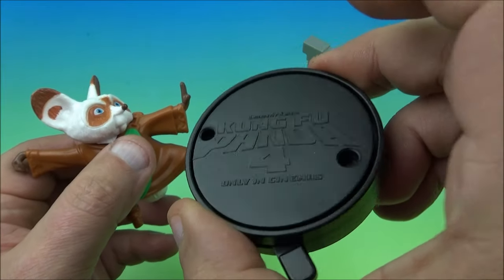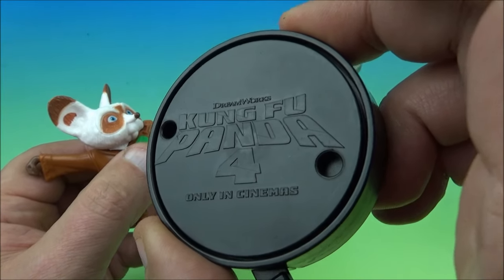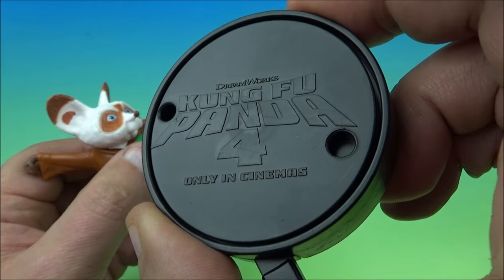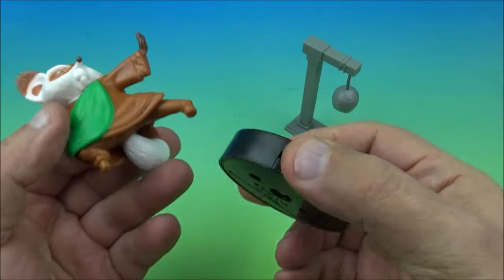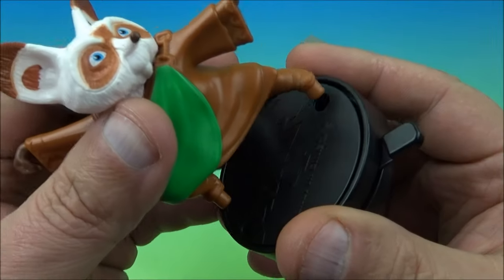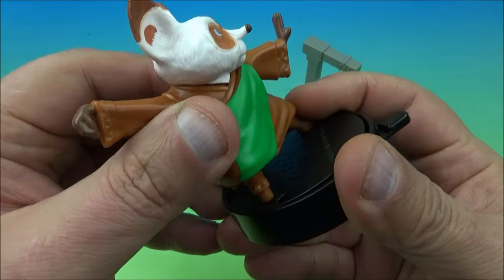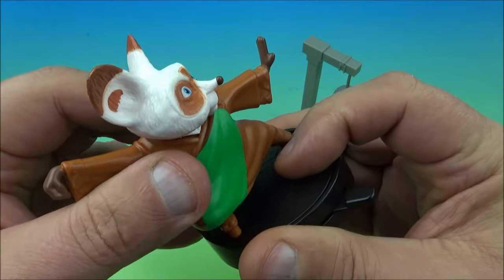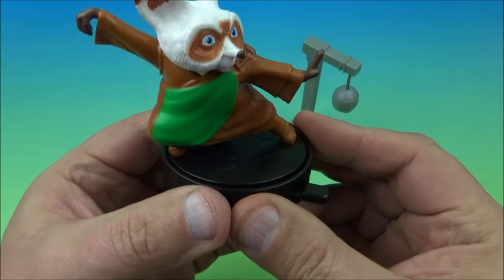So it comes with two other accessories and it has this cool little base, and this is part of the gimmick with these. Let's see if I can angle that. There you go, it reads Dreamworks Kung Fu Panda 4 on there, only in theaters and all that good stuff. So there's little pegs on his feet and you can see the holes right there on this base. So this is what you do - you peg it in, get it lined up just right, push it in there, and now he's on his little base.